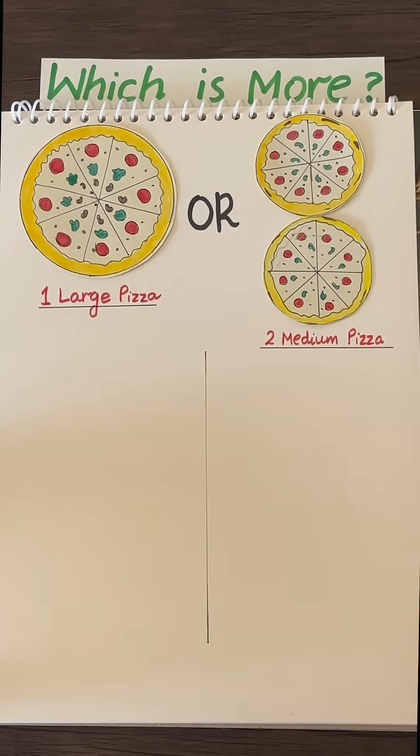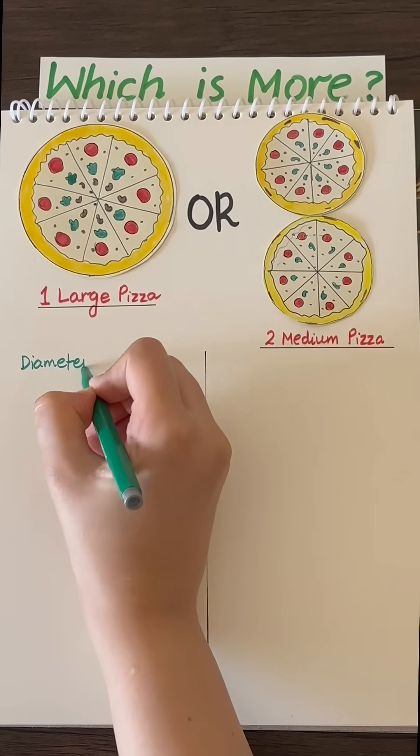Let's draw a line in the middle so we can see the difference. A large pizza has a diameter of 18 inches.